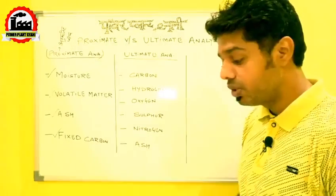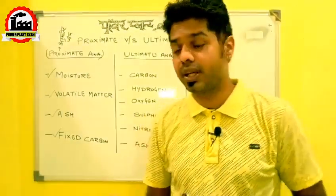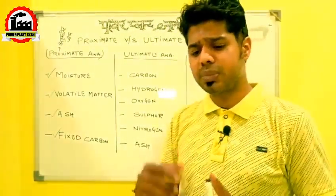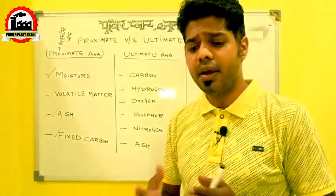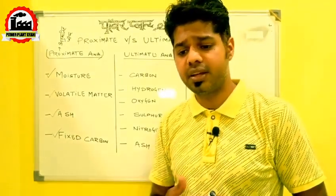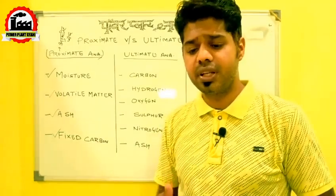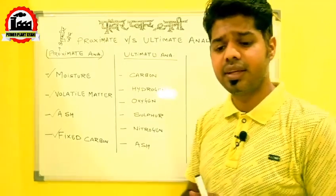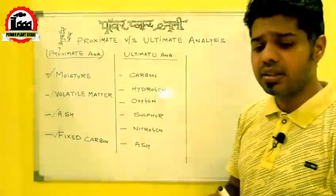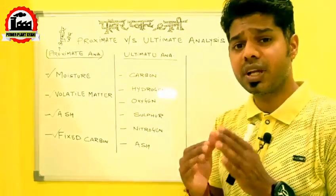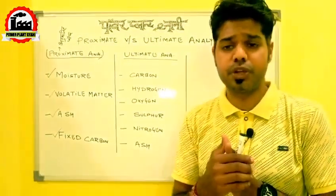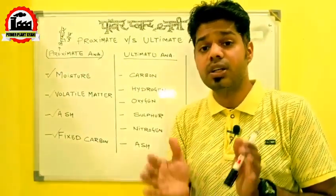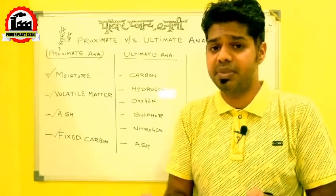The second factor in proximate analysis is volatile matter. Volatile matter consists of non-combustible gases and combustible gases. Volatile matter includes gases like methane, carbon monoxide, and hydrogen. These are the components released during combustion when volatile matter is calculated in proximate analysis.